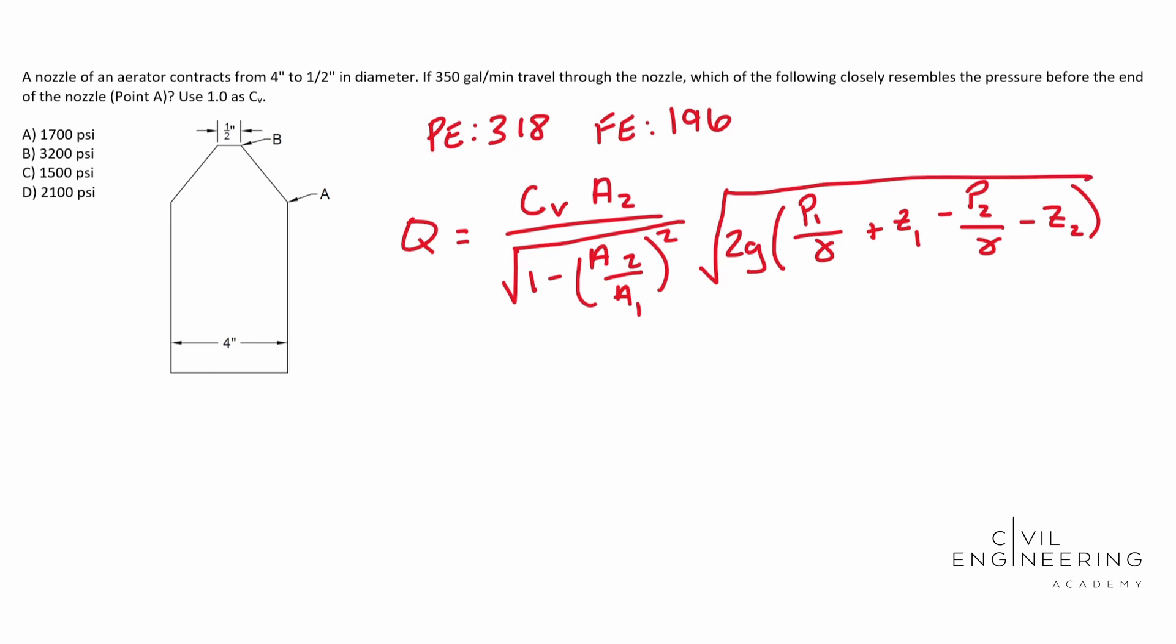So that is your venturi problem. It looks kind of intimidating, but it's not. We have basically everything we need to know. We can solve for area two. We can solve for area one. We're obviously looking for our pressure at point one. So this is what we are searching for, and we don't have any elevation. So that's going to end up being zero, and point B is open to the atmosphere. So that's also zero, the pressure at point B. So a lot of this stuff cancels out.